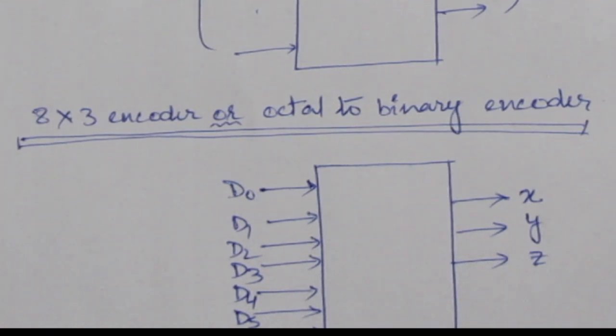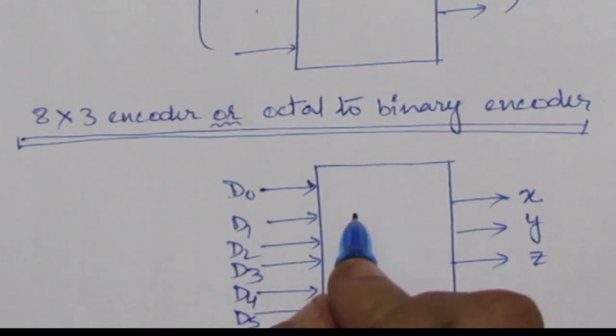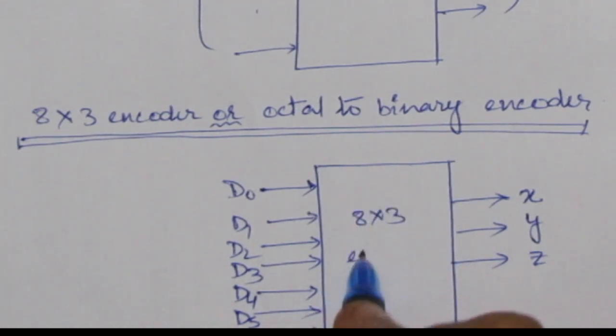That is, it is the opposite of the decoder. This one is 8 into 3 encoder.